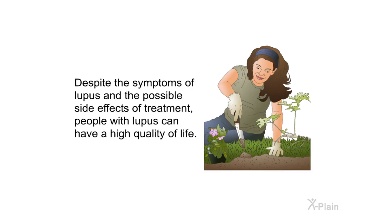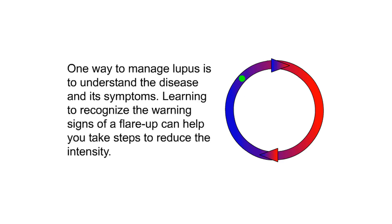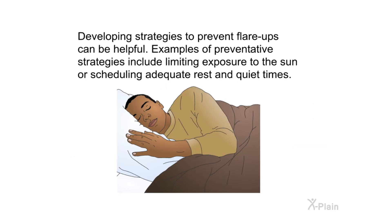Despite the symptoms of lupus and possible side effects of treatment, people with lupus can have a high quality of life. One way to manage lupus is to understand the disease and its symptoms. Learning to recognize the warning signs of a flare-up can help you take steps to reduce its intensity. Developing strategies to prevent flare-ups can be helpful — examples include limiting exposure to the sun or scheduling adequate rest and quiet times.